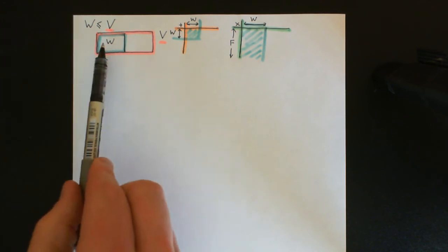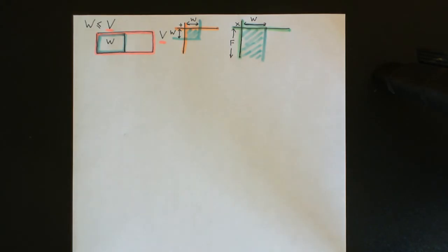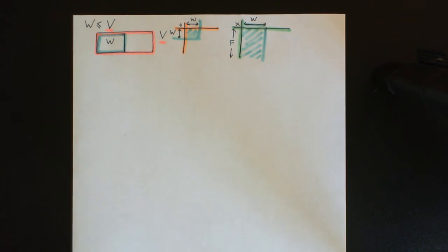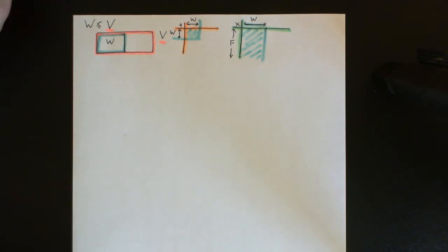If this subset capital W, with these two restricted addition and scalar multiplication laws on it, actually satisfies the axioms of being a vector space over the field F in its own right, then we call it a subspace of the vector space capital V. It could exist perfectly well on its own as a perfectly good vector space over the field F. That's the concept of a subspace.